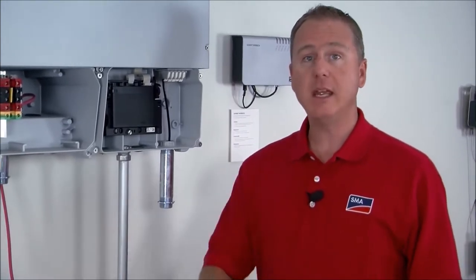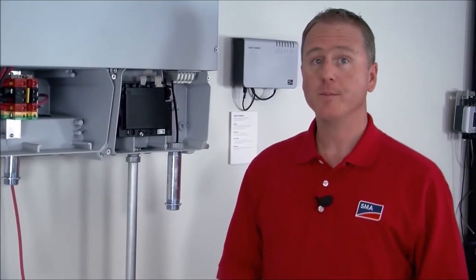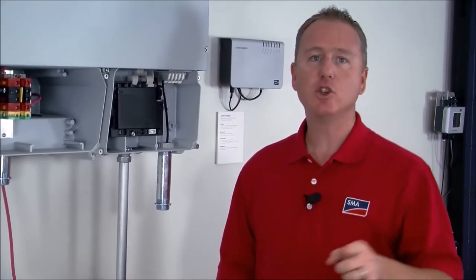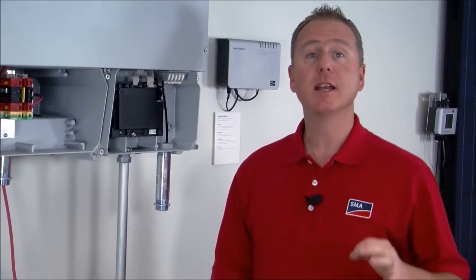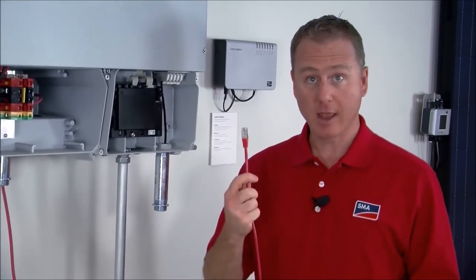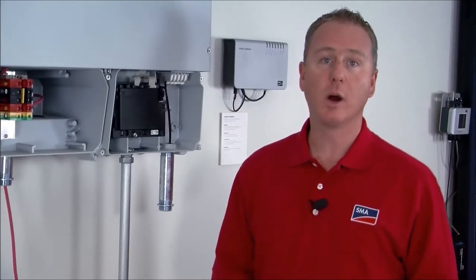So the last thing to do inside the tri-power is to install your communication wire. Now the speedwire module behind the LCD display is factory installed in Denver, Colorado so all you have to do is run the ethernet from the customer's router or the cluster controller and run it into the speedwire module. Now if you have multiple tri-powers then you're just going to daisy chain the tri-powers together. We cover this in another tech tip video but for now let me run my ethernet cable up through the conduit and connect it into one of the two ports on the speedwire module.